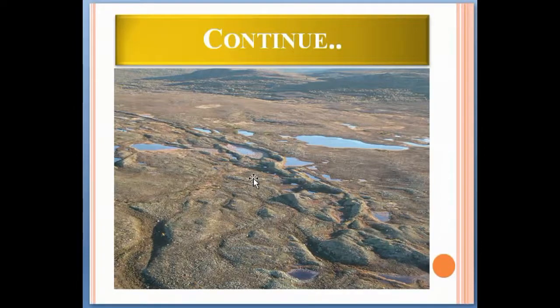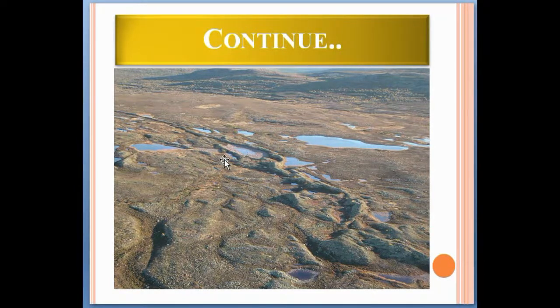As you can see in this photograph, this is an esker. Eskers always form below the glacier. This is a fluvial glacial deposition or fluvial glacial landform.